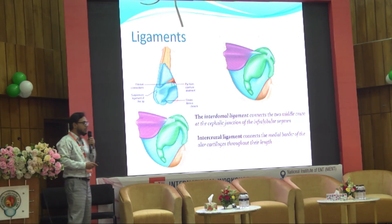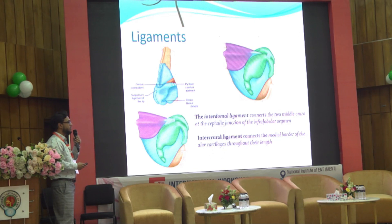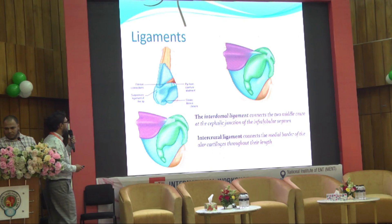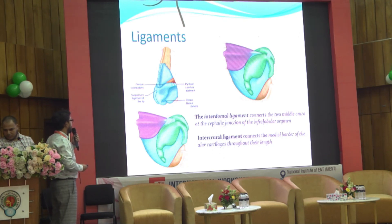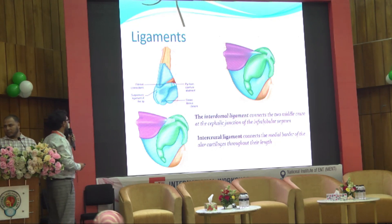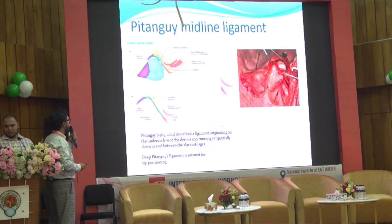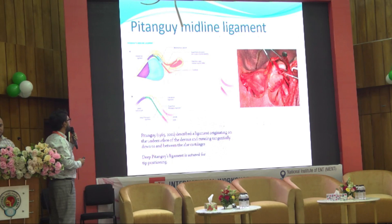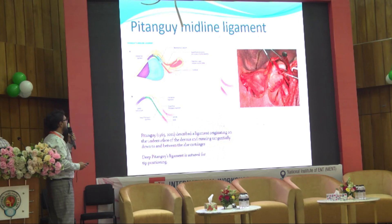There are important ligaments for tip stability. The interdomal ligament connects the two middle crura at the genu at the junction of the infralobular segment. The intercural ligament connects the medial border of the lower lateral cartilage throughout their length. The Pitangui ligament originates from the undersurface of the dermis and runs throughout the lower lateral cartilage — it is sometimes preserved for tip stability and sometimes divided for tip repositioning.